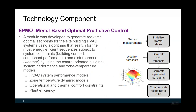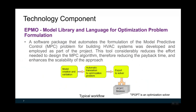The figure on these slides shows the key steps for model predictive control. The next key component is the model library and the language for optimization problem formulation. A software package that automates the formulation of MPC problems for building and HVAC systems was developed as part of this project. This significantly reduced effort needed to design MPC algorithms, thereby reducing the payback time and enhancing the scalability of the proposed approach. The figure shows the typical workflow, including model creation, validation, automatic translation to optimization problem, and export to a solver.